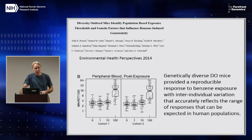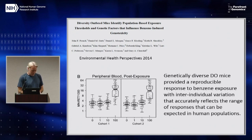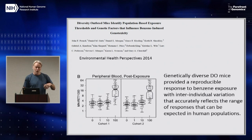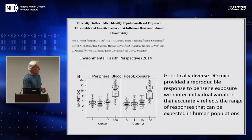One of the big concerns that people raise about outbred mice is that the studies can't be reproduced. This is a plot from a paper that we published on benzene exposure using DO mice. At low exposure there's very little DNA damage, but when we get up to 100 ppm, some of the mice show high levels of DNA damage. We did the experiment once with about 300 mice,